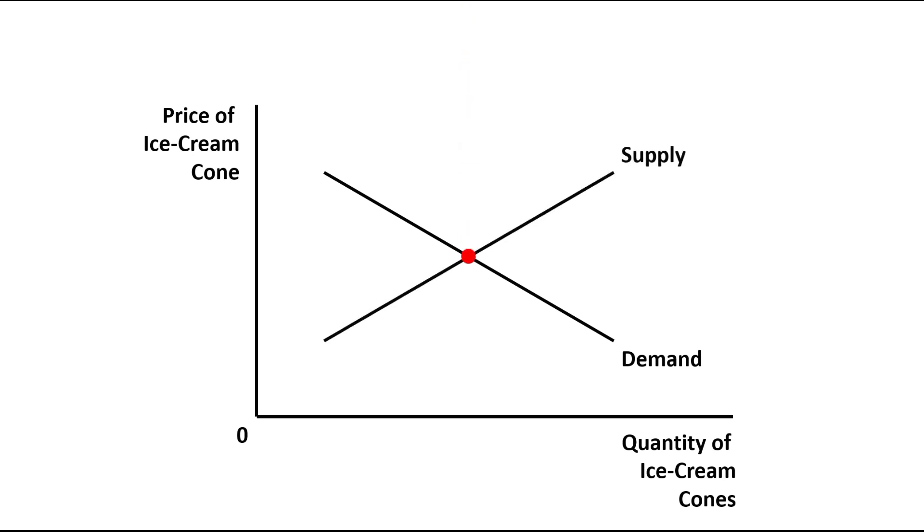The intersection point will be referred to as equilibrium point. $3 is assumed as equilibrium price. And 100 ice cream cones is assumed as equilibrium quantity.